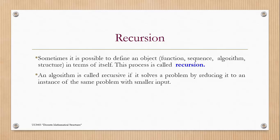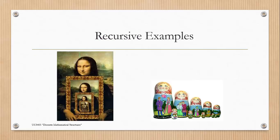We have already discussed that an algorithm can be written in its iterative form or in its recursive form. In recursive form, we solve the problem by reducing it to an instance of the same problem with smaller inputs. From this picture you can easily analyze the concept of recursion — that an object is defined in terms of itself. Similarly for the second picture.